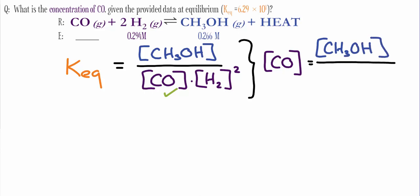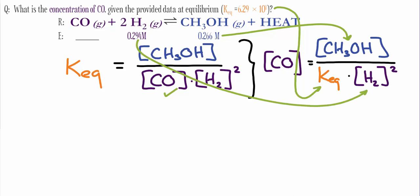We're going to manipulate our current equation so that it solves for the concentration of carbon monoxide. This means that we're going to have the concentration of our methanol divided by Keq times the concentration of hydrogen raised to its coefficient of two.